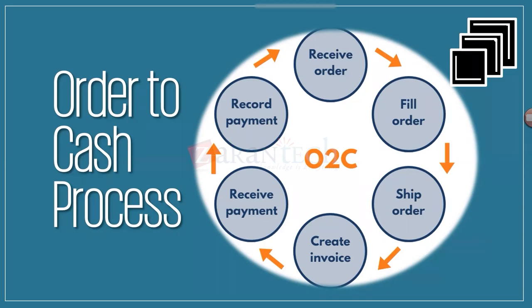In the fulfillment and shipment stages, there are multiple sub-steps: picking and packing. Picking means you select the item from your warehouse, then pack it, then stage it. Staging means you send it to your courier department or courier premises where they pick the item and send it to the customer. Once you courier the item, the customer receives it.